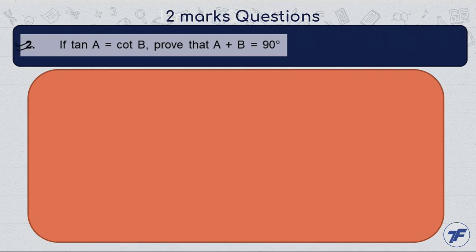Next question: if tan A equals cot B, prove that A plus B is equal to 90 degrees.